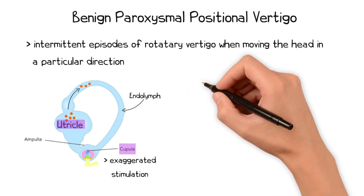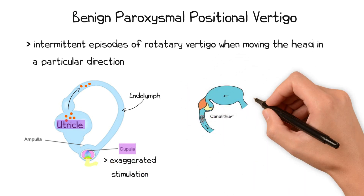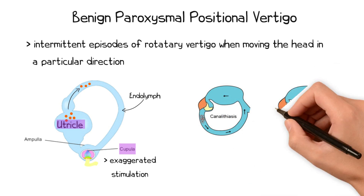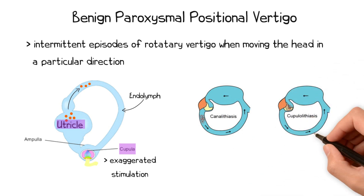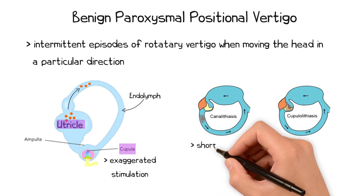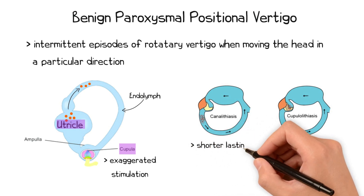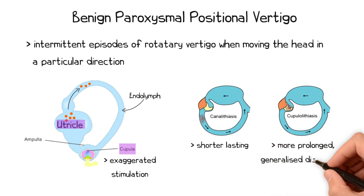The otolith can either stay within the canal, known as canalolithiasis, or can stick to the copula, known as copulolithiasis. With canalolithiasis, the duration of disequilibrium tends to be shorter-lasting, whereas copulolithiasis causes more prolonged, generalized disequilibrium.